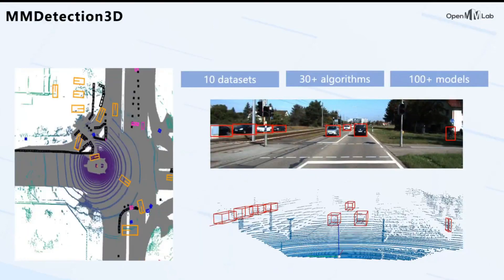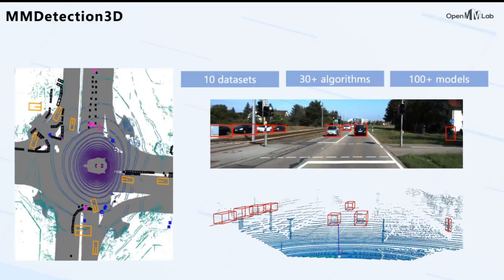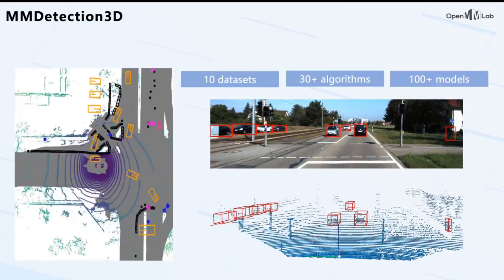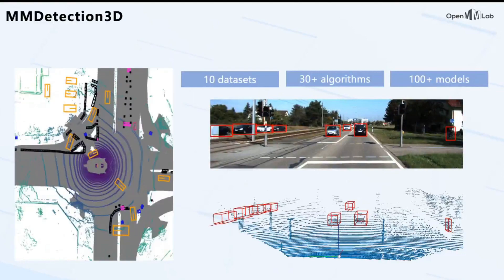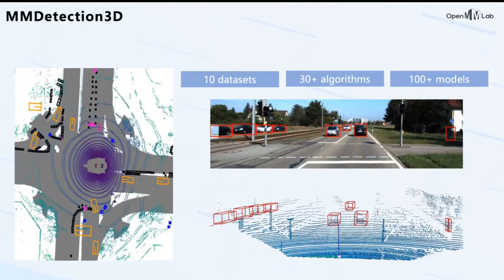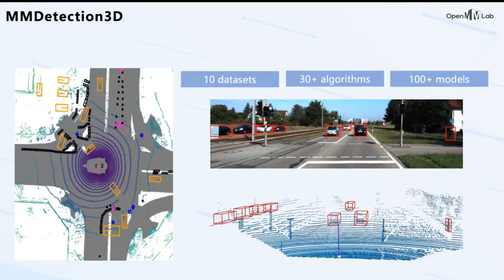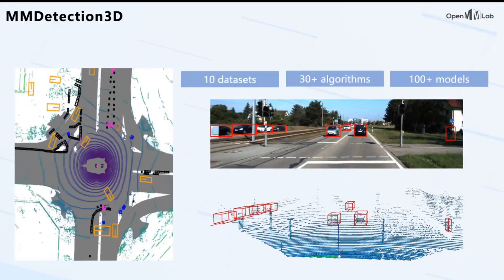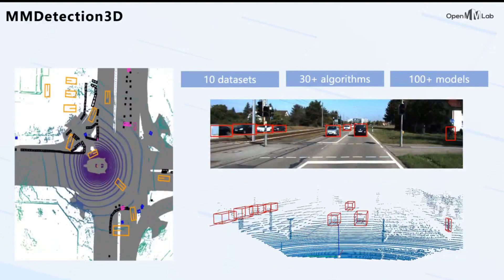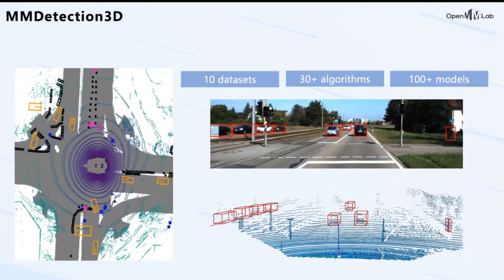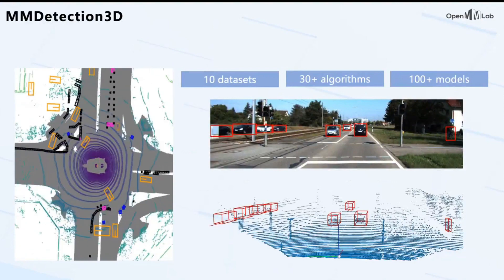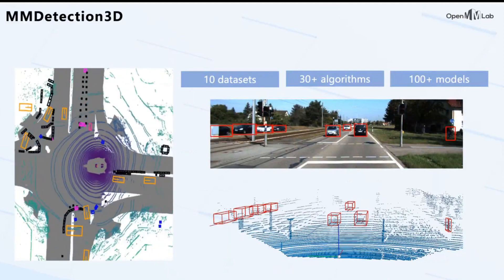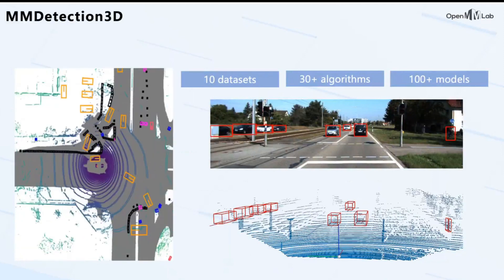MMDetection3D is a platform for general 3D perception. It supports 3D object detection methods with different sensors like cameras and lidars. Since it adopts a similar design to MMDetection, it is much easier to integrate 2D detectors and use modules from MMDetection. It now supports more than 30 algorithms and 100 models.